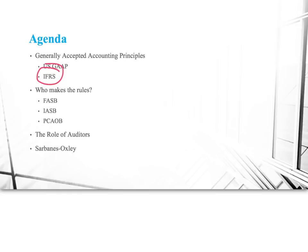We'll talk about who makes the rules. As you know, as business majors, we have a lot of jargon, and so here we're talking about the Financial Accounting Standards Board, the International Accounting Standards Board, and the Public Company Accounting Oversight Board.